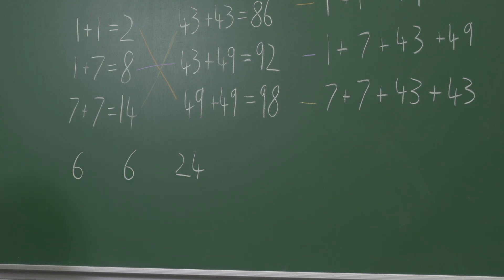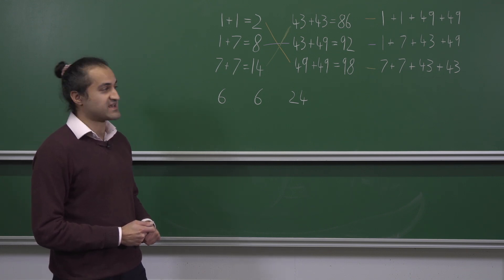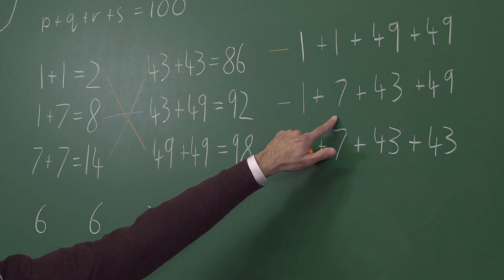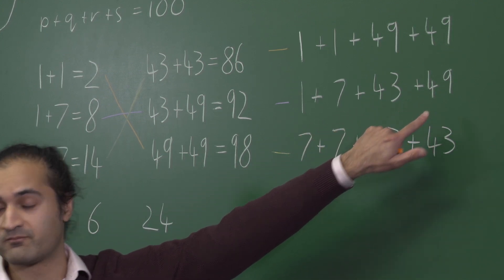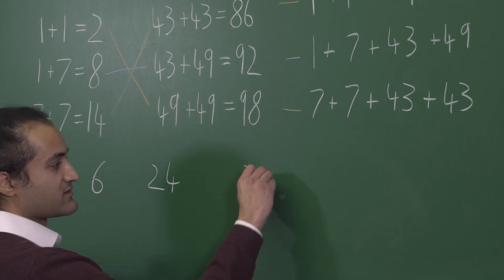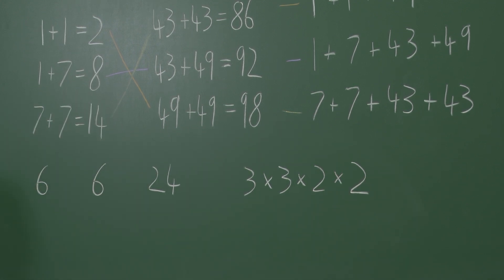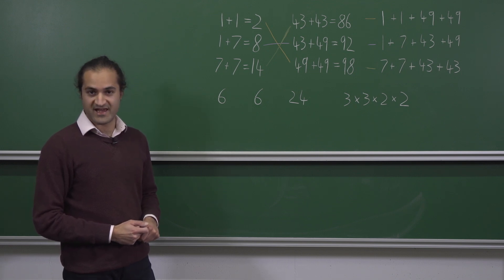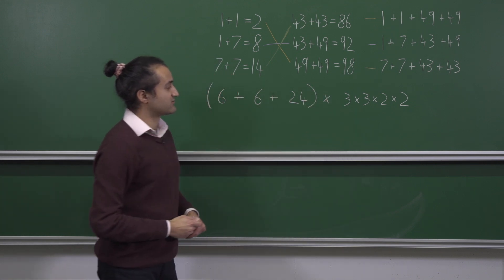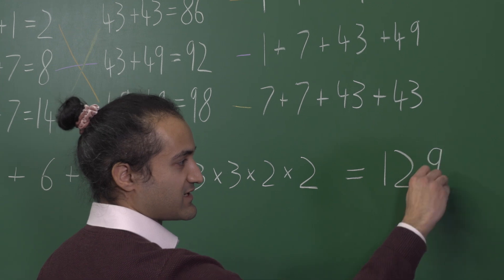Each solution for P, Q, R, S corresponds to multiple solutions for A, B, C, D. As noted earlier, there are three powers of 7 with remainder 1, three with remainder 7, two with remainder 43, and two with remainder 49. So for each ordering of P, Q, R, S, there are 3 × 3 × 2 × 2 = 36 ways to choose A, B, C, D. The total number of possibilities is (6 + 6 + 24) × 36 = 1296 solutions.